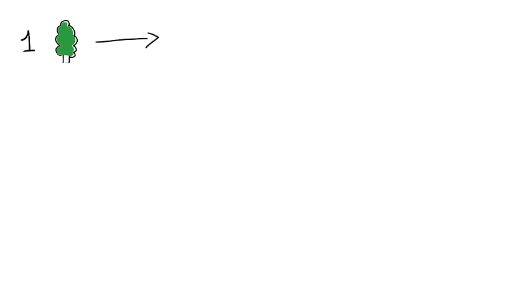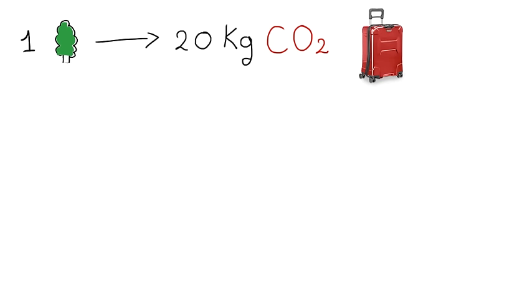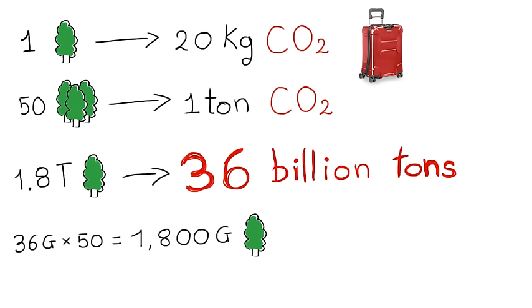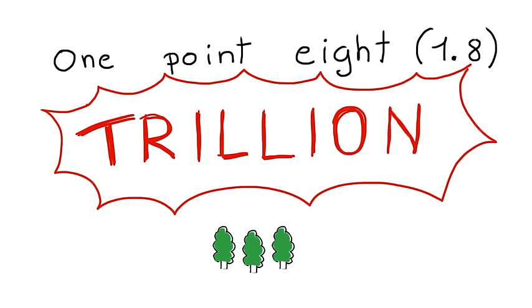One tree can suck 20 kilograms of carbon from the air every year, which is about what your average airport luggage should weigh. So 50 trees can suck a whole ton every year. Our goal is to offset 36 billion tons, so that's 1800 billion trees, which is 1.8 trillion trees. Let me repeat that. It's 1.8 trillion trees with a T.